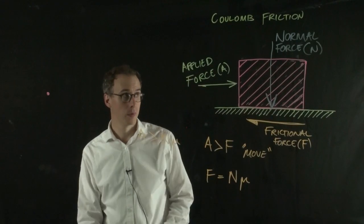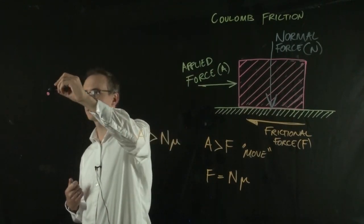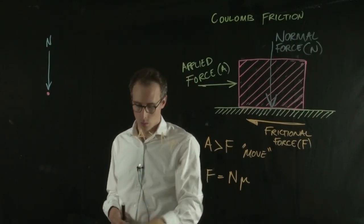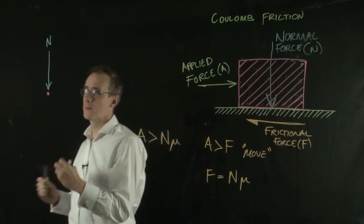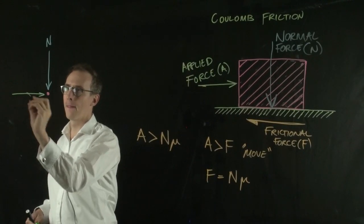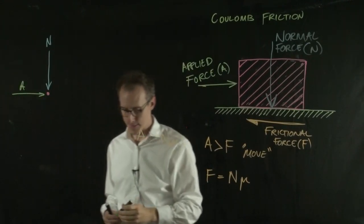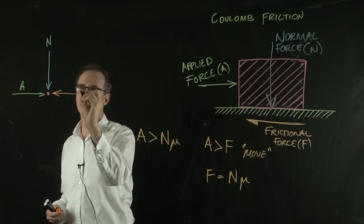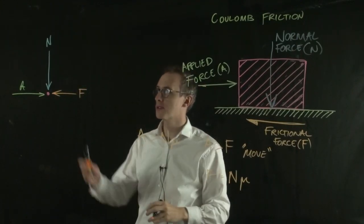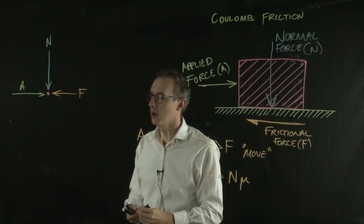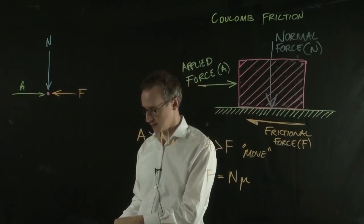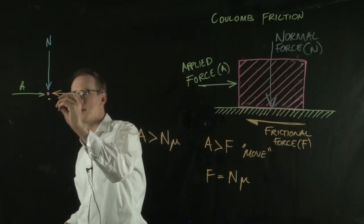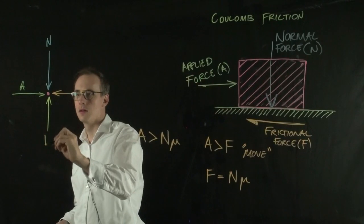We have our normal force N, an applied force, a frictional force, and what's missing here is some sort of resistive force from the surface. Let's call that R.